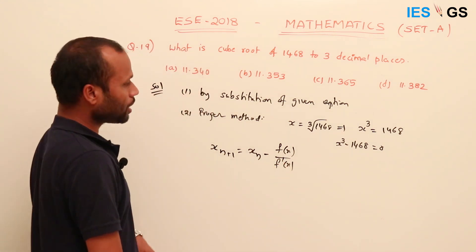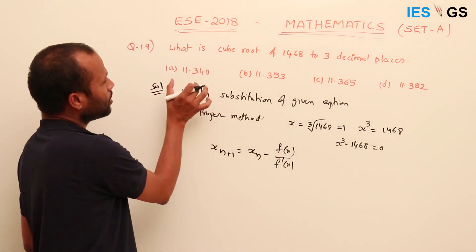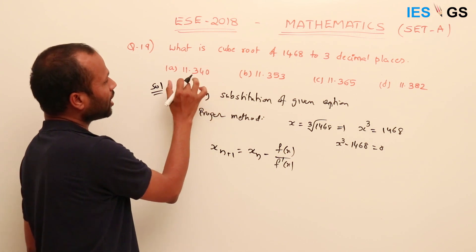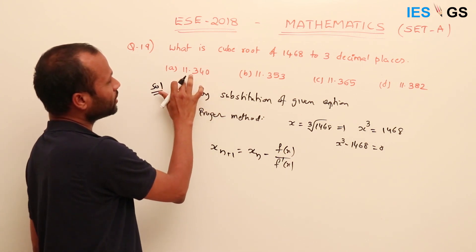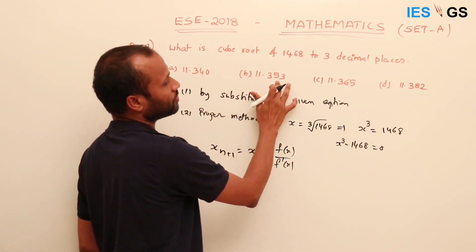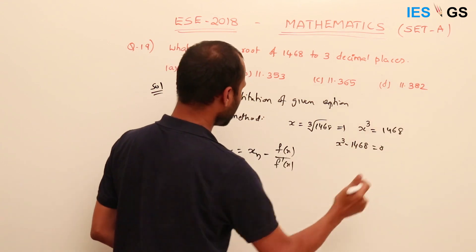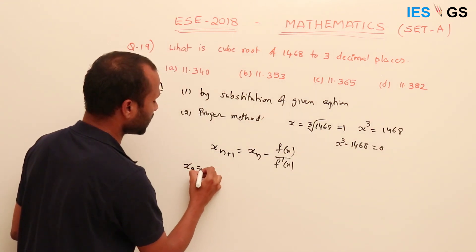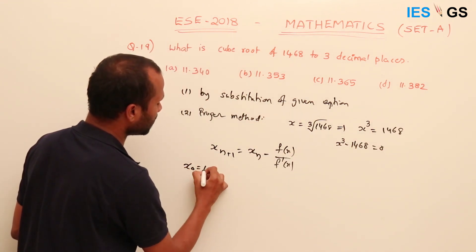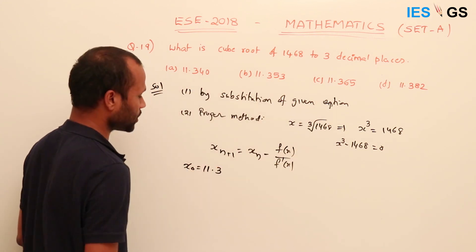For the initial approximation, observe the given options carefully: they are 11.34, 11.35, 11.36, and 11.38. So we take x₀ = 11.3 as the initial approximation based on the given options.